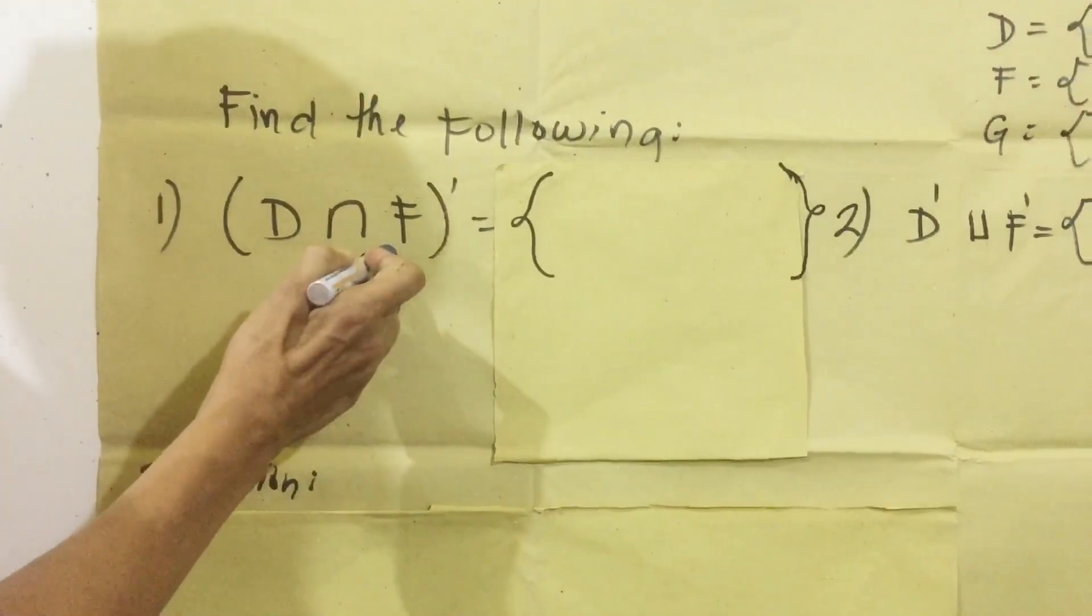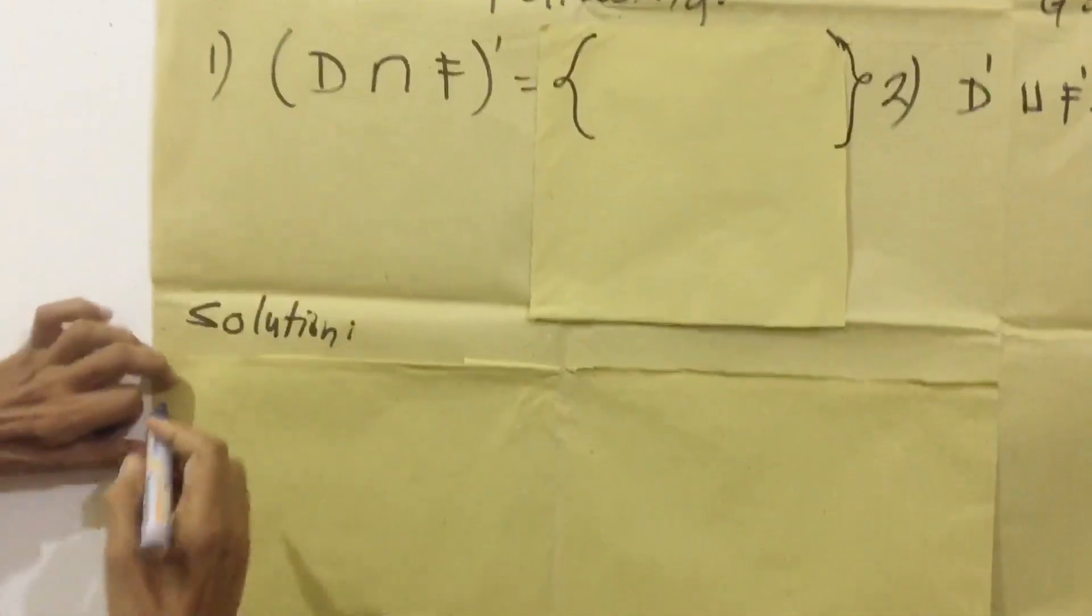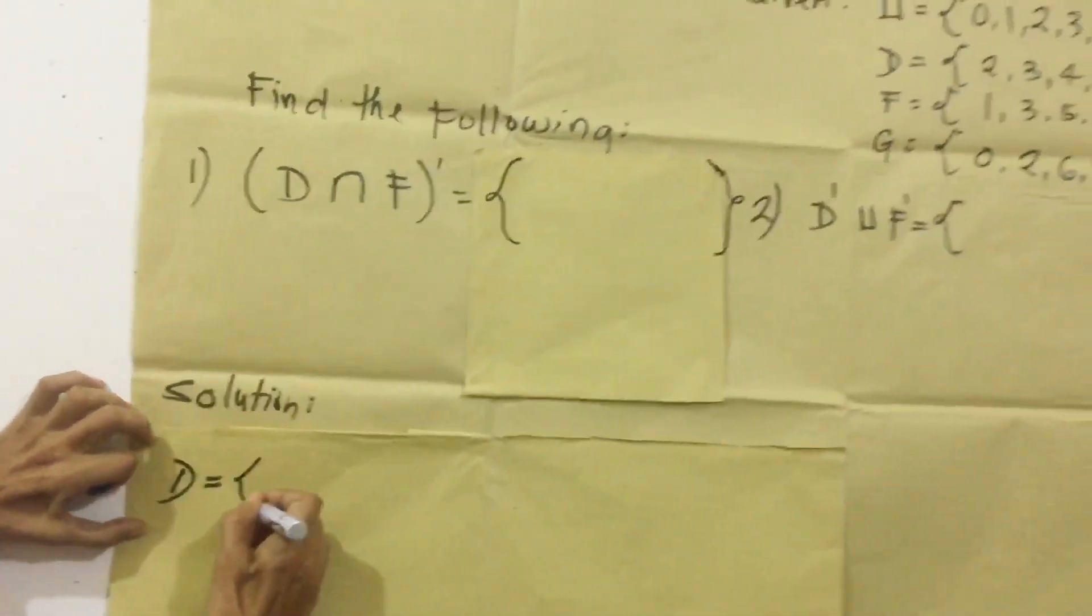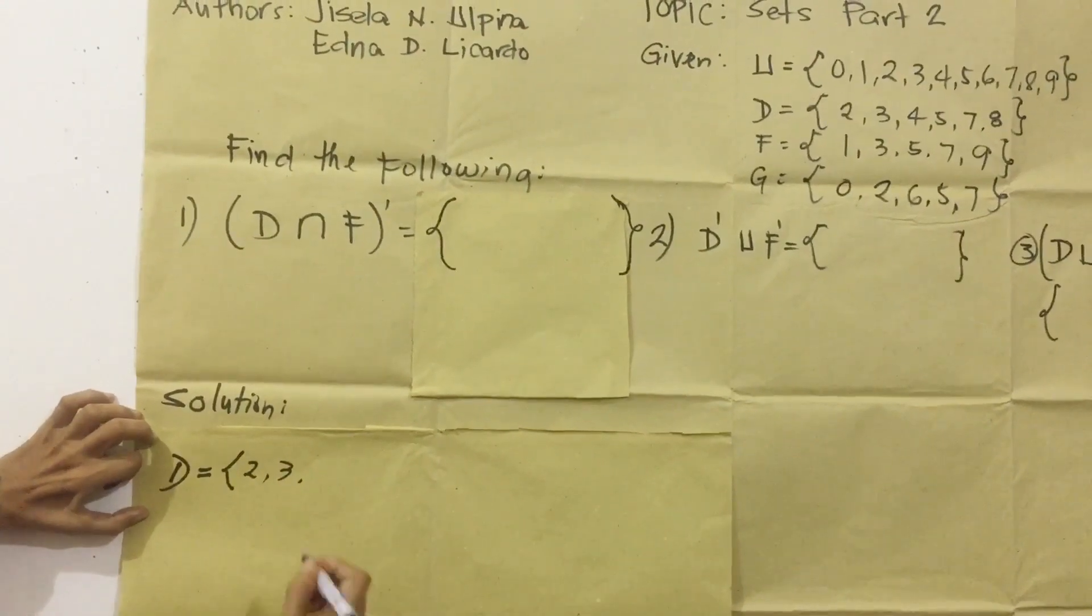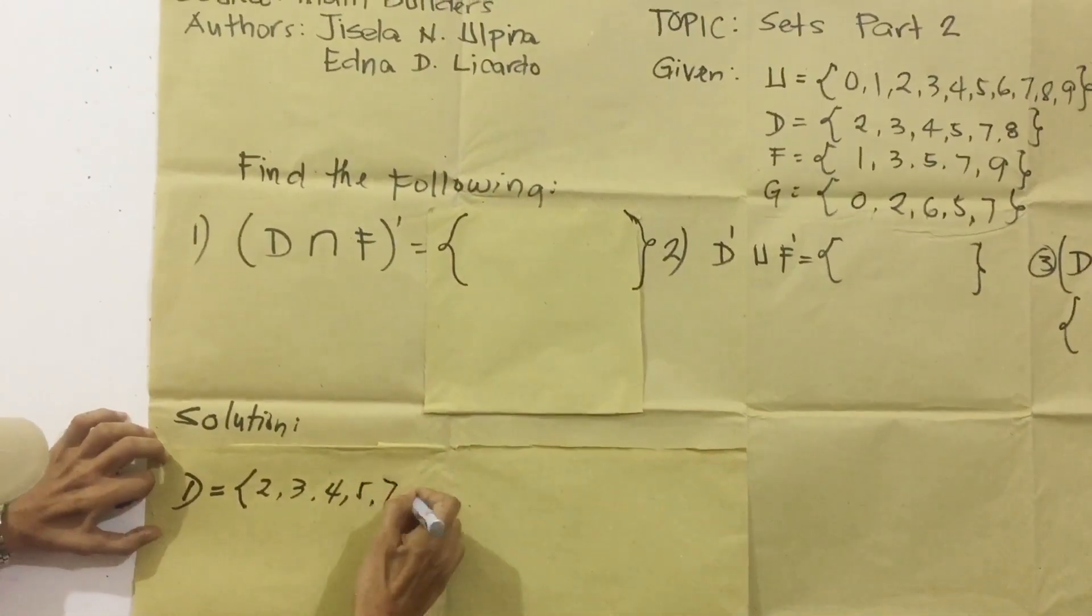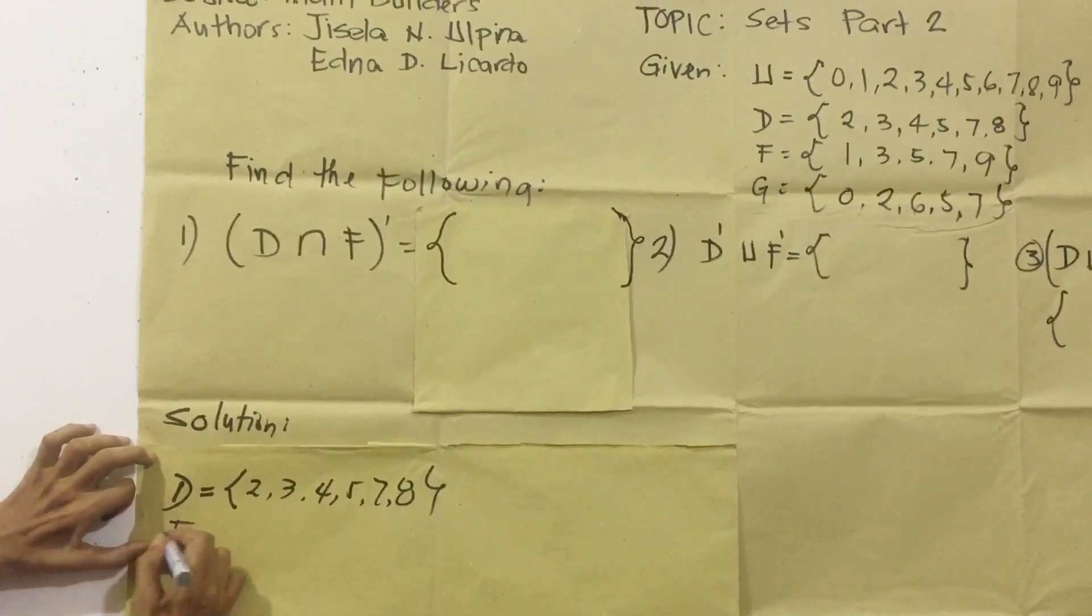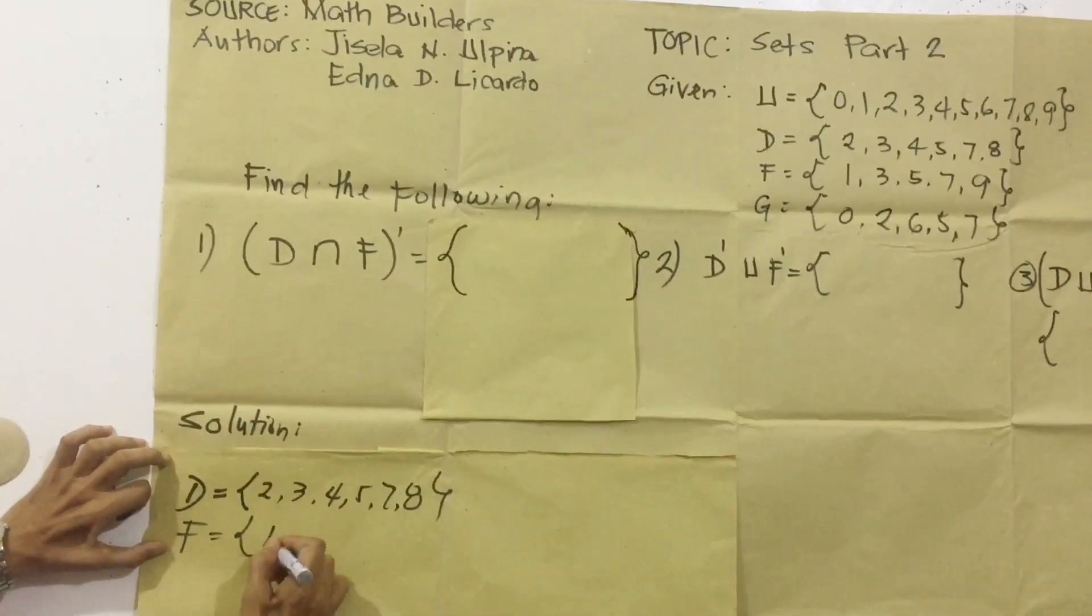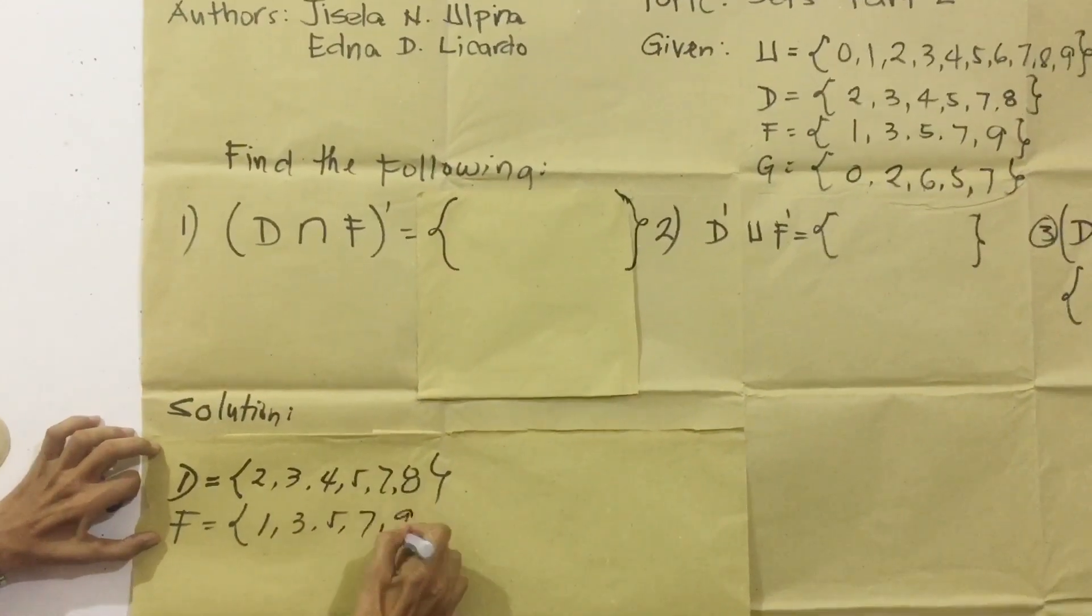Ito natin number 1: D Intersection F Complement. Pag magsasol tayo, kopyahin natin yung set D. Ang element ng set D ay 2, 3, 4, 5, 7, 8. Then, kopyahin natin ang set F. Ang element siya ay 1, 3, 5, 7, 9.